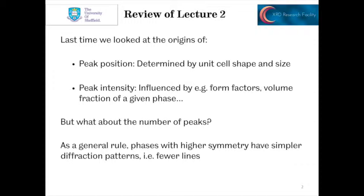We've so far looked at peak position, and how this is determined by unit cell shape and size, and peak intensity, and how this had a wide number of parameters that fed into it — form factors, the volume fraction, the given phase, and so on. But what about the number of peaks in a diffraction pattern? As a general rule, if a phase has higher symmetry, it will have a simpler diffraction pattern, so fewer lines.